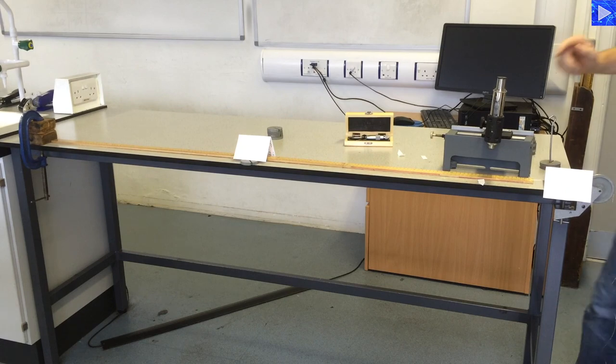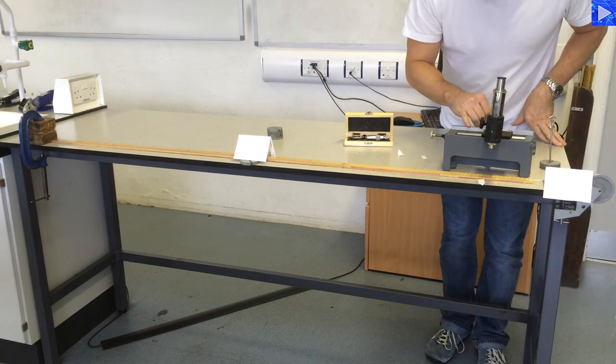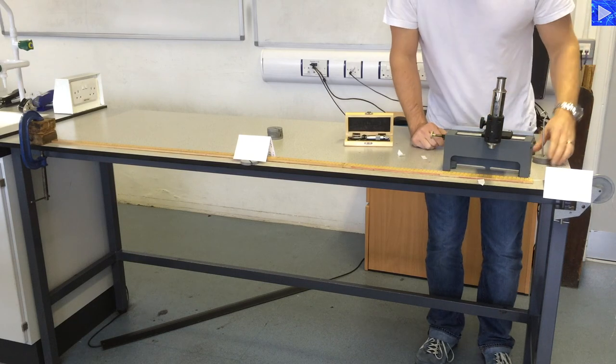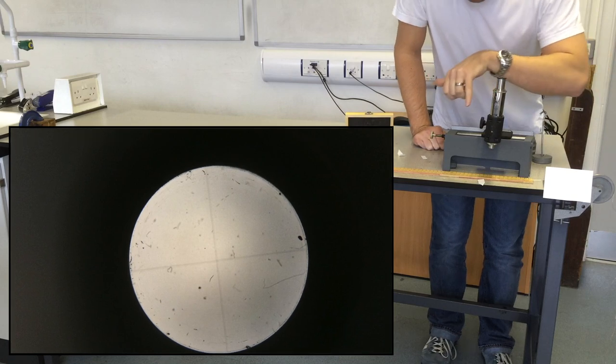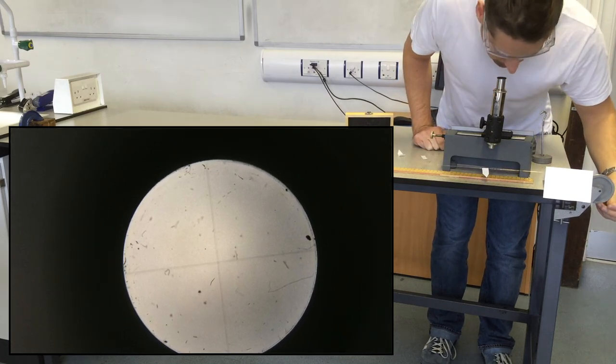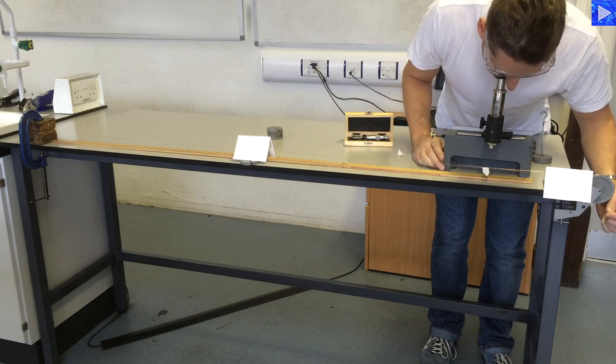So to take measurements of the travelling microscope. There's a vernier scale on the microscope body itself. And inside the microscope there's a crosshair. So I'll line the crosshair up with the edge of the marker. And that will be my starting position.